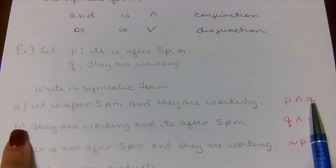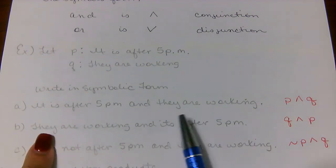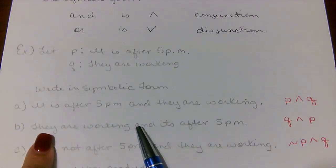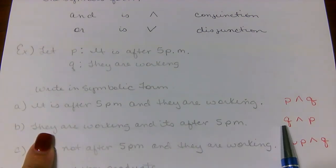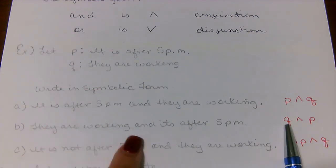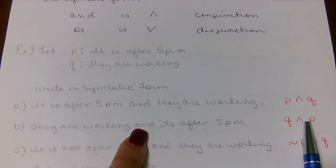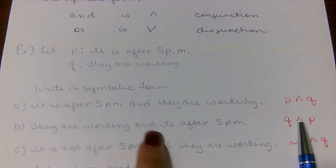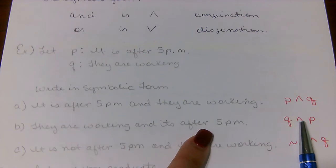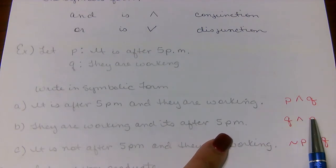For part B, it says they are working — that's my Q — so Q goes first this time, then the 'and' symbol, and then it is after 5 p.m., which is my P statement.